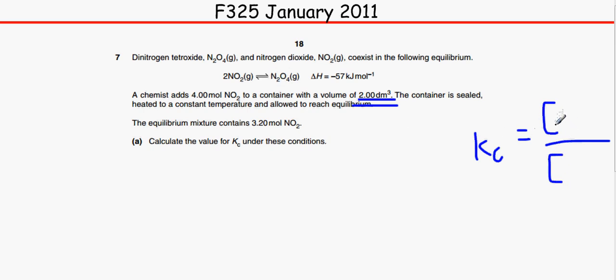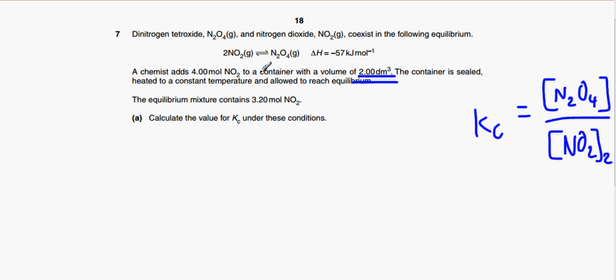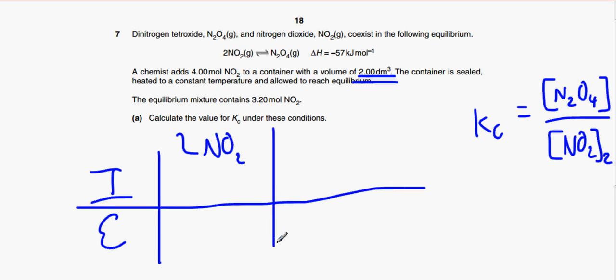And in this case it is N2O4 over NO2 squared. We square it because we've got two moles here. So it tells us the initial and it tells us the equilibrium. So if you write this down, NO2, we have two here. Initial and we have equilibrium. And we have N2O4.